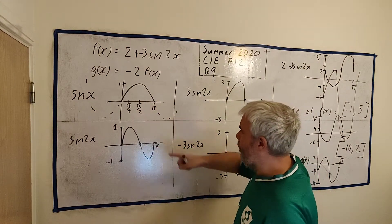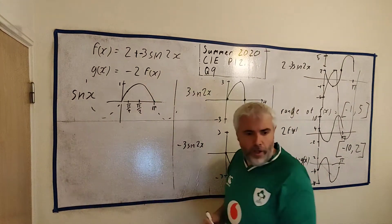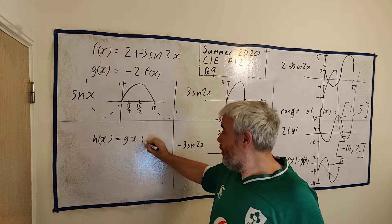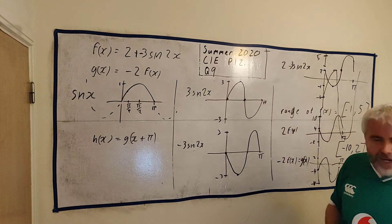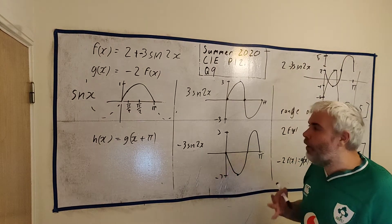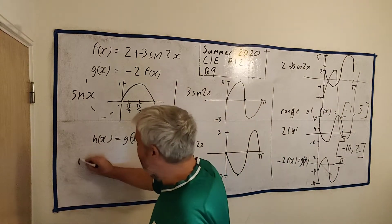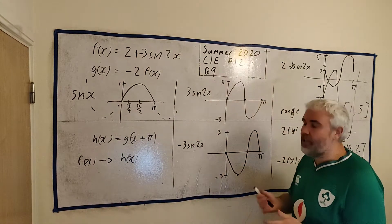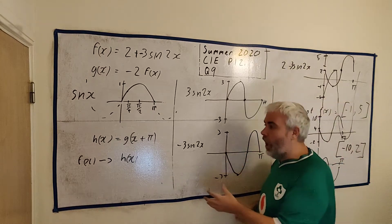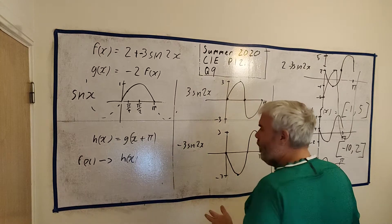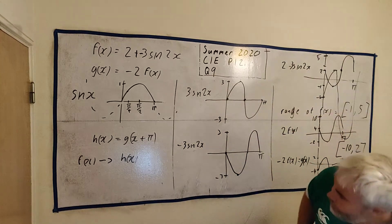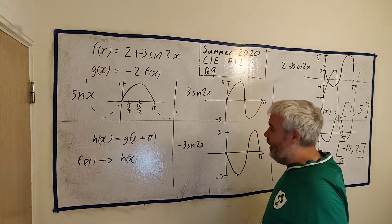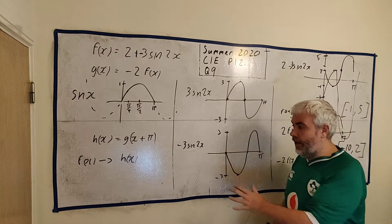Part C tells us that h(x) is equal to g(x plus pi) — that's inside the bracket, so it's a horizontal shift. And the domain is between minus pi and zero. A lot of students would have got this wrong because they didn't know how to answer it. They wanted us to describe how we get from f(x) all the way to h(x). Let me find h(x) first and then show how to move between them.